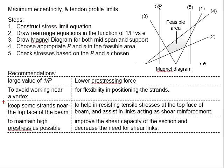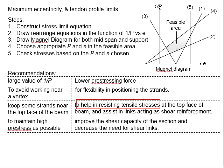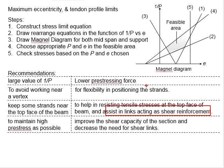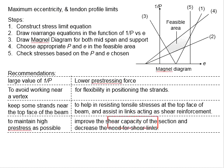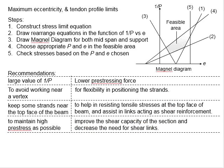Some may recommend keeping some strength near the top face of the beam, to help in resisting the tensile stresses at the top face and also to assist links acting as shear reinforcement. Should you have concern with the shear capacity of the section, you can use higher pre-stressing loads to strengthen the shear capacity of the section. This can increase the effectiveness of shear links so that nominal shear links can be used without much concern.